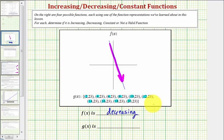Now notice as the inputs or x values increase, the outputs or y values remain constant or remain the same, which means g of x is a constant function.